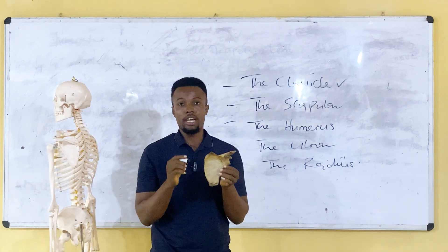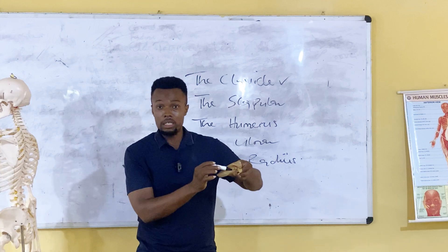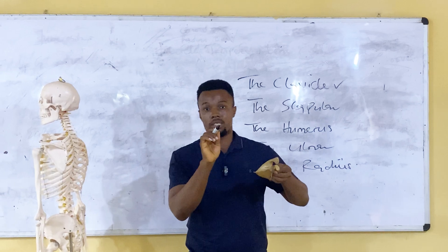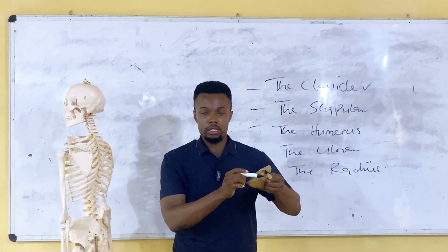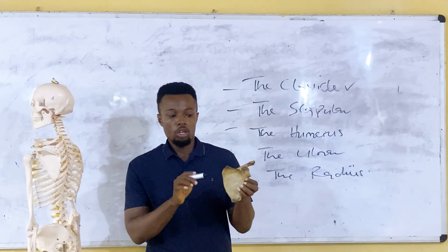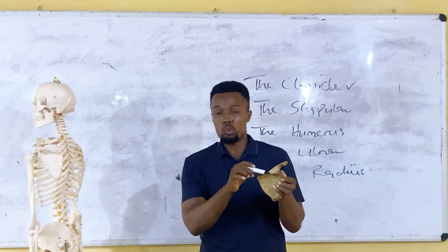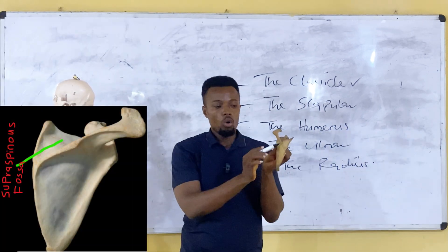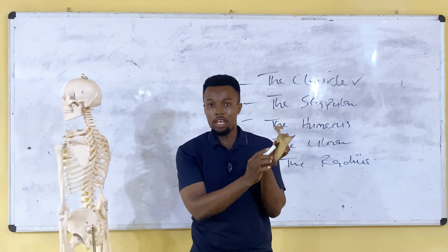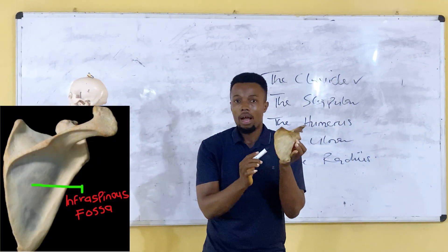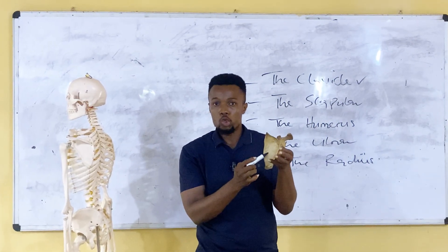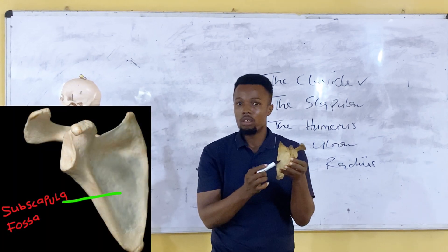Let's look at the next feature in the scapular. We can see this fossa. We have about three fossae in the scapular. This one is referred to as the supraspinous fossa, while the one below is referred to as the infraspinous fossa, and this one here is referred to as the subscapular fossa.